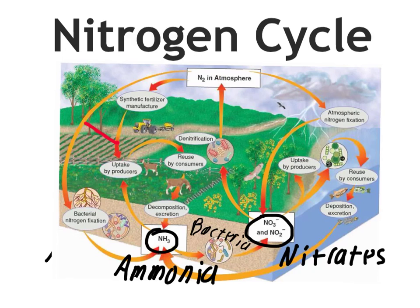The tricky thing about this cycle is that it's all run by bacteria — bacteria here, bacteria here, bacteria here. This makes it a little less visual than the other ones. It's easy to think about the water cycle because you can see most of those steps, and even with the carbon cycle it's easy to see a lot of those things. Whereas with the nitrogen cycle, it's a little more difficult because the bacteria makes the process more abstract. The key to remembering this is just that bacterial nitrogen fixation is taking the nitrogen out of the atmosphere, and denitrification is what returns the nitrogen to the atmosphere.